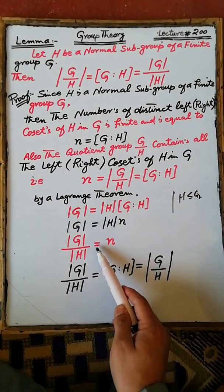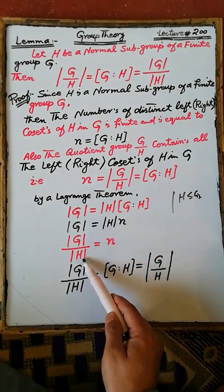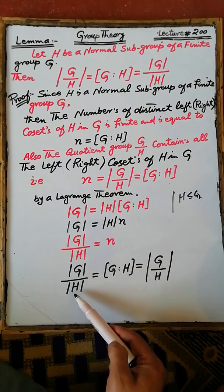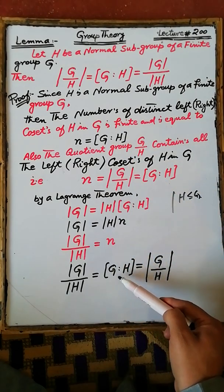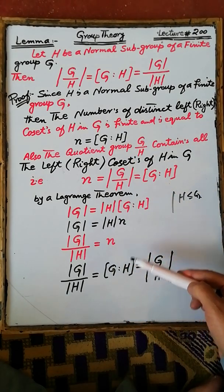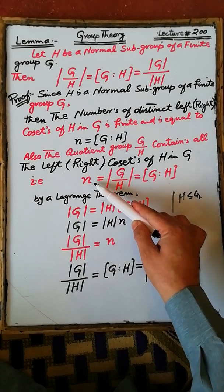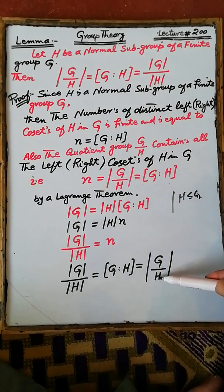This gives us n is equal to the order of G divided by the order of H. That is, the order of G divided by the order of H equals n, where n is the index of H in G. Therefore the index of H in G equals the order of the quotient group G/H, which is our required result.